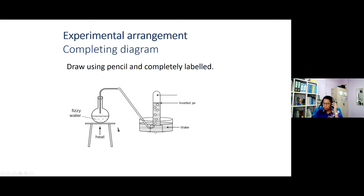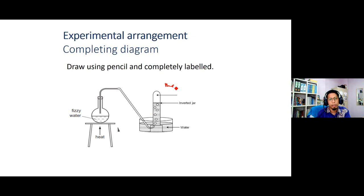Pelajar mungkin boleh melukis dengan lebih tepat. Contohnya alatan apa yang boleh digunakan untuk mengukur — mungkin ini berbentuk alat seperti measuring cylinder atau gas syringe. Dengan hanya meletakkan test tube di sini, kita tidak dapat mengukur isi padu gas yang dihasilkan.